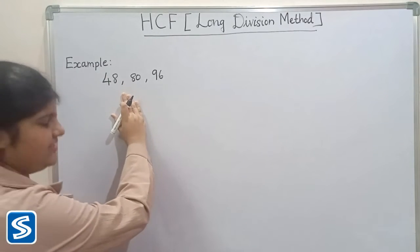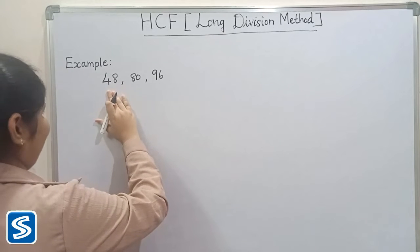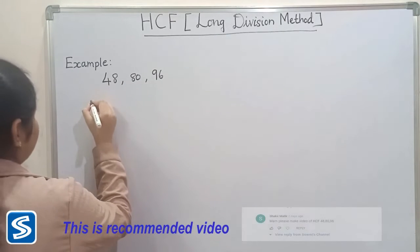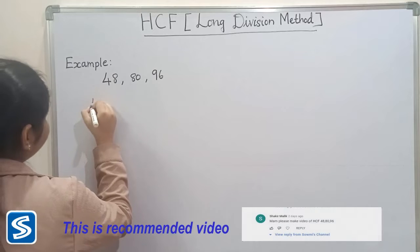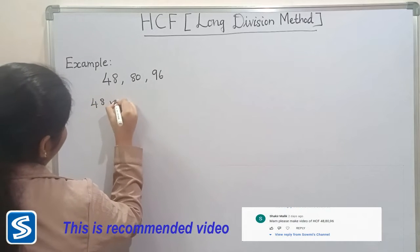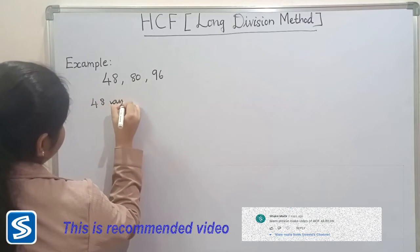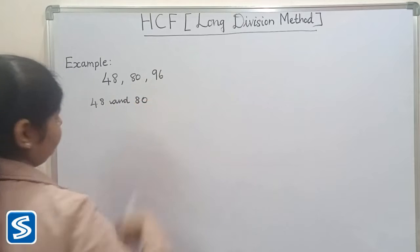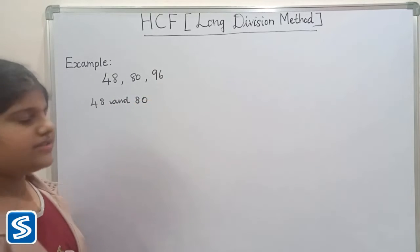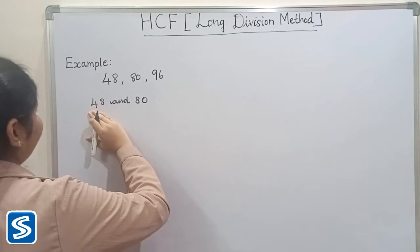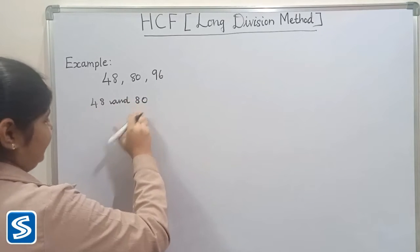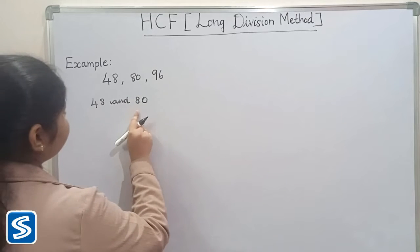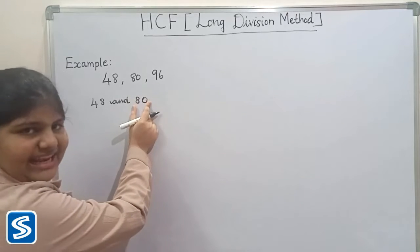So now I am going to choose 48 and 80. First we have to find the HCF of 48 and 80. To find the HCF of 48 and 80, we have to divide them.